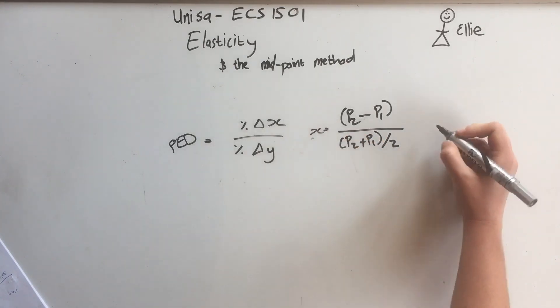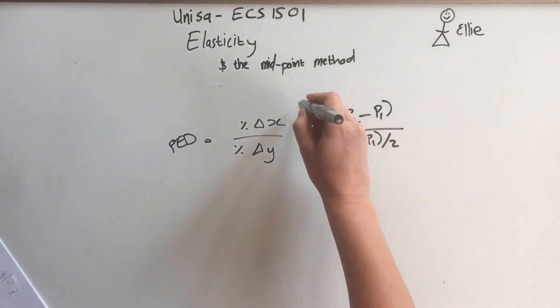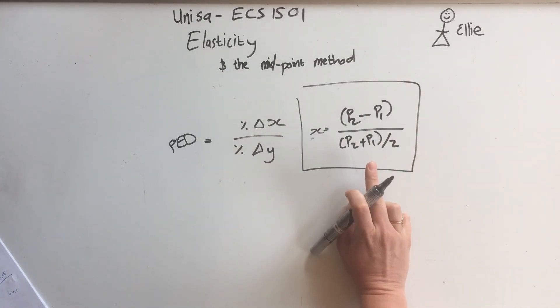Okay, so the change in X would be that and then the change in Y is exactly the same thing. This is not new minus old divided by old. This is a different formula called the midpoint method.